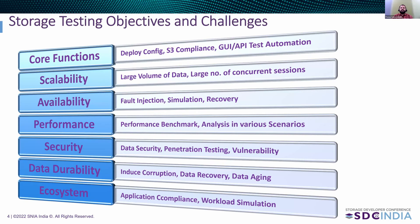We have divided the testing problem into seven areas: functionality test, which deals with core functions; scalability; availability; performance testing; security; durability; and ecosystem testing. Under core functions, we consider deployments and various configurations. In S3 compliance, we validate conformance with S3 operations such as object upload, download, versioning, bucket operations, etc., using S3 client tools. We also undertake UI and UX testing in this area.